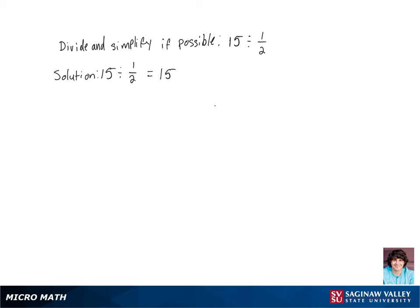The reciprocal of 1 half is 2 over 1, so we get 15 times 2 over 1. That's the same as 15 times 2, and 15 times 2 is 30, and that's our final answer.